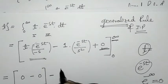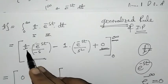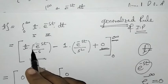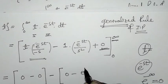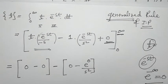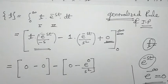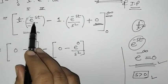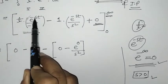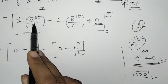For the lower limit, we put t = 0. The t term becomes 0, and e raised to minus s times 0 is e raised to 0. So we get 1 upon s squared. Note that s must always be greater than 0 — since s is positive, we have e raised to minus infinity equals 0. If s were less than 0, we would get e raised to infinity, which is infinity, and the Laplace transform would not be defined.